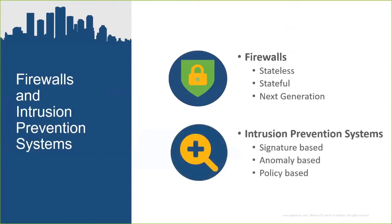Next-generation firewalls combine many features related to securing traffic flows in and out of the network. Intrusion prevention systems, which are somewhat different from firewalls, can also be incorporated into a firewall — for example, a firewall with an IPS subsystem built in provides deeper analysis of traffic flows. IPS systems come in three basic mechanisms: signature-based, which compares traffic to a database of known attack patterns, also referred to as rule-based or pattern-based matching.